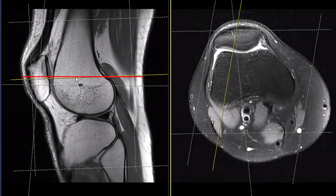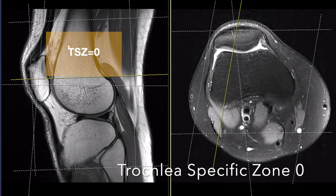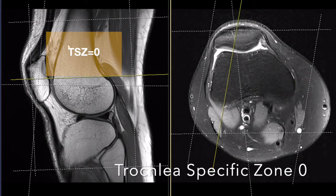The trochlear specific zone 0 is localized above the posterior femoral condyle line.